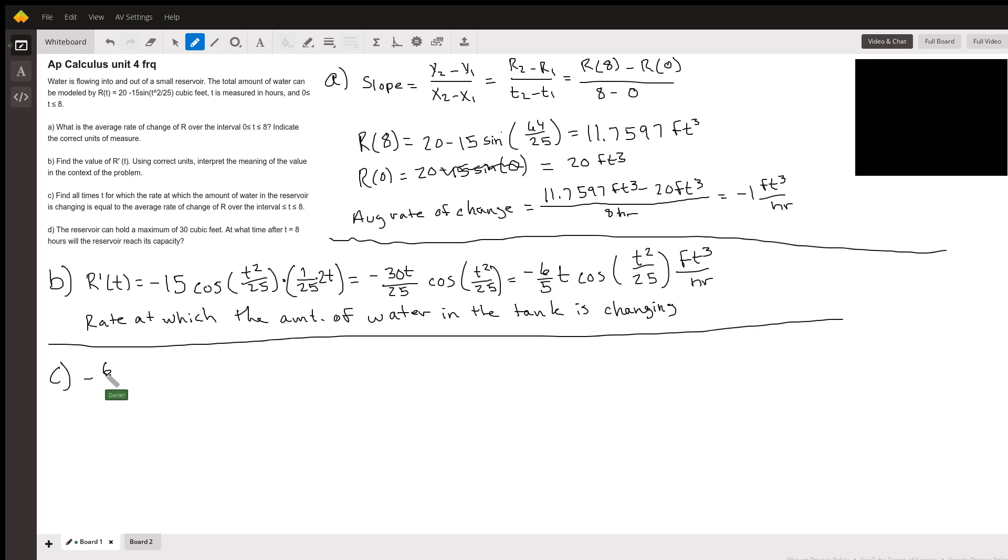Okay, so we're going to write negative 6 over 5 T cosine of T squared divided by 25, and we're going to set that equal to negative 1. So I had a hard time doing this without doing it graphically, so I was able to solve it graphically. Let me see if I can do that right now.